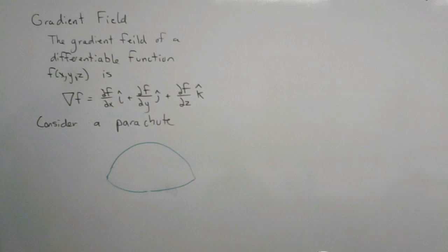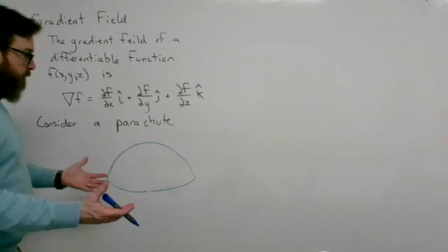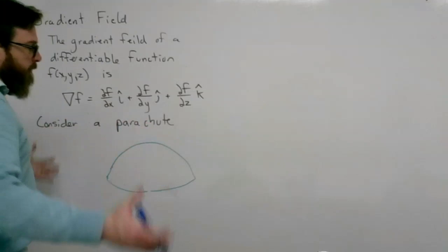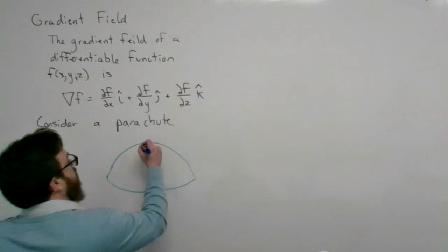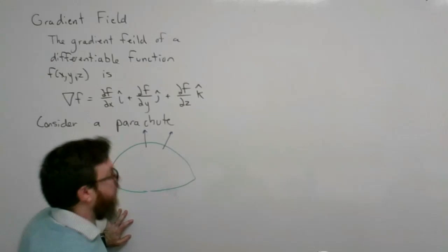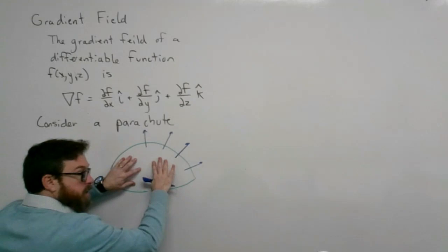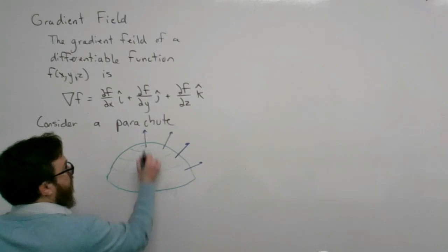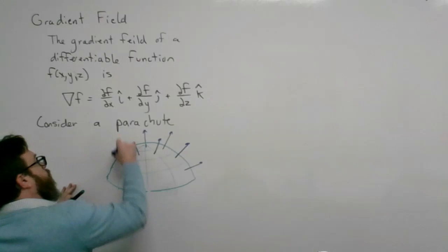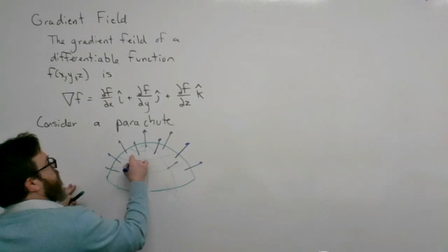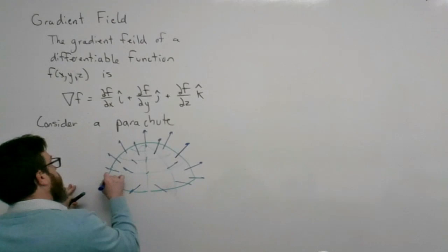Consider a parachute: when going down in a parachute, the wind comes up and slows down, moving through the parachute perpendicular to its surface. You can think of a parachute as a filter slowing the wind down. All these vectors move perpendicular to the parachute's three-dimensional orientation.